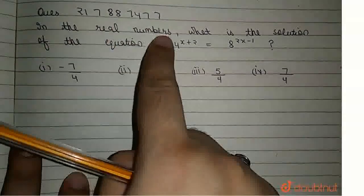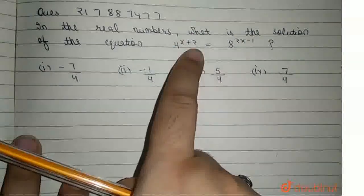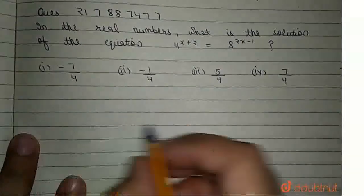Hello, our question is: in the real numbers, what is the solution of the equation 4^(x+2) = 8^(2x-1)?